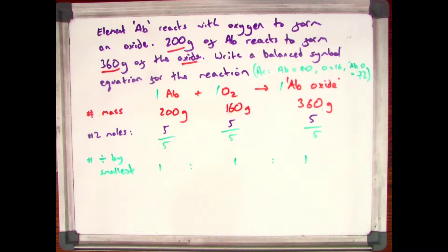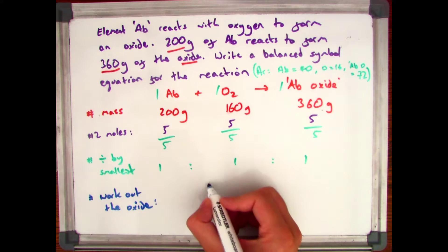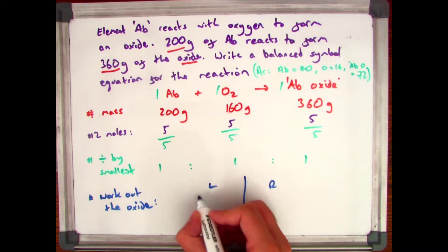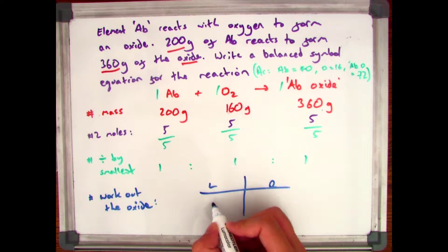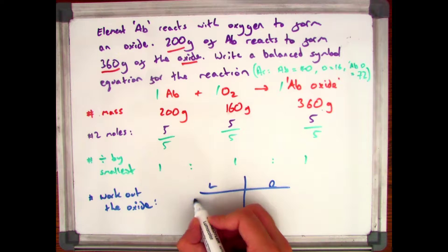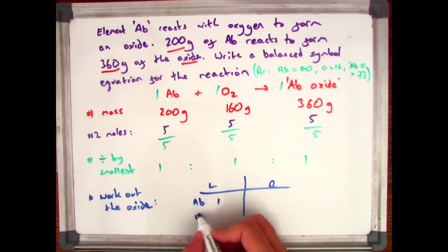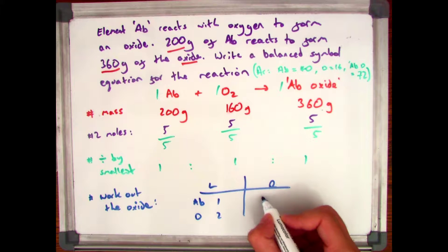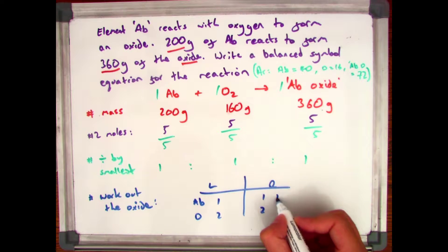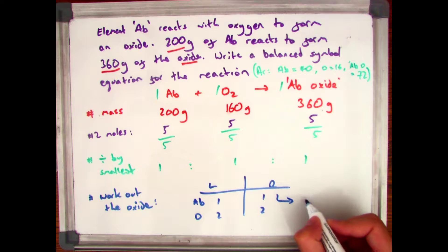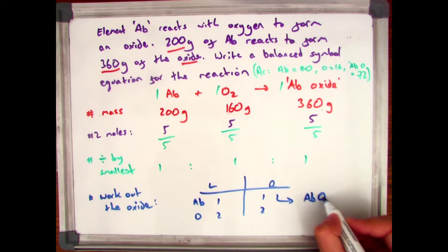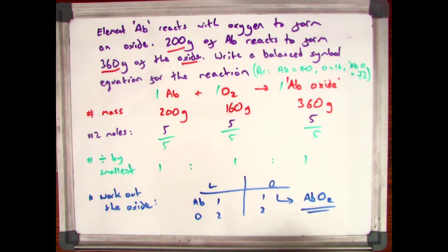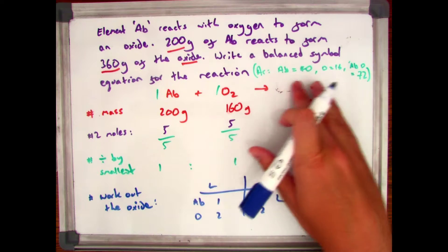Now all that's left is to work out the formula of the oxide. Look at how many atoms you have on the left and right. I have 1 AB and then I have 2 oxygens. On the right hand side I only have 1 compound for my AB oxide, therefore I have to have 1 AB and 2 oxygens, so my formula is ABO₂.